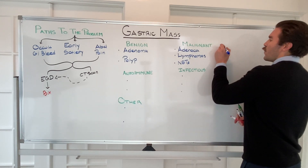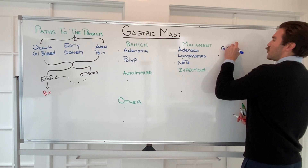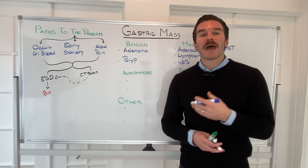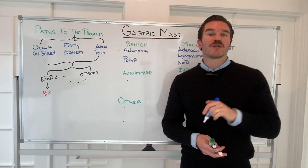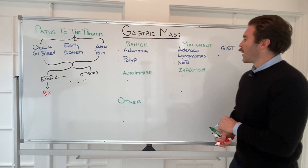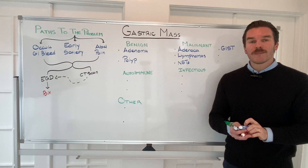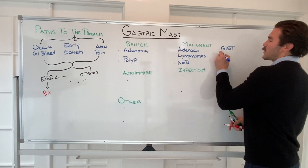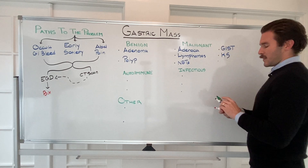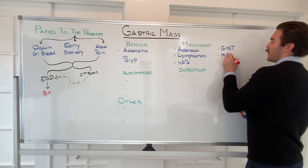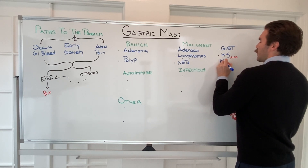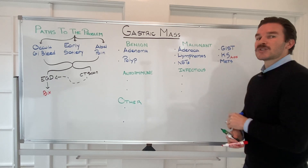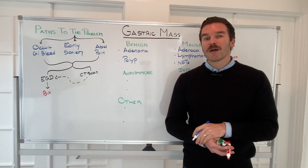Additional malignant causes include gastrointestinal stromal tumors (GISTs), which are sub-epithelial masses emerging from just below the stomach epithelium. In immunocompromised hosts with AIDS, we may think about Kaposi's sarcoma. And finally, gastric metastases — solid organ tumors that metastasize to the stomach from elsewhere in the body — are also possible.